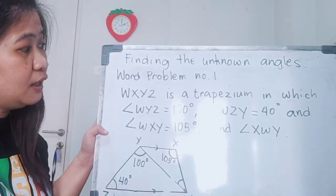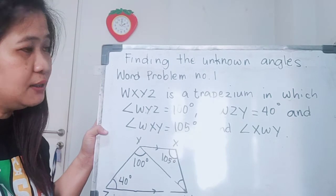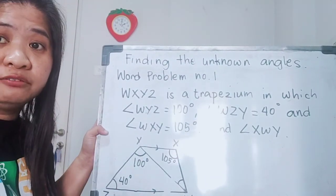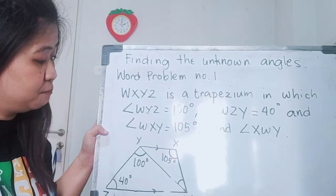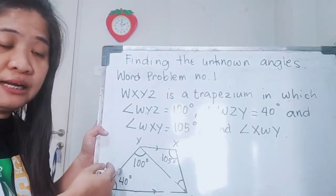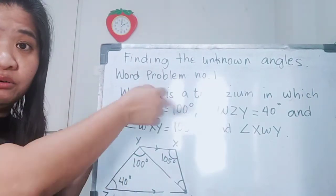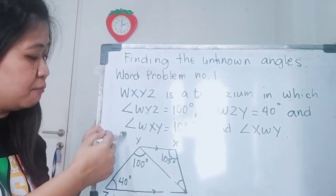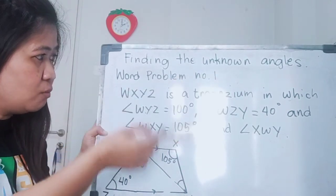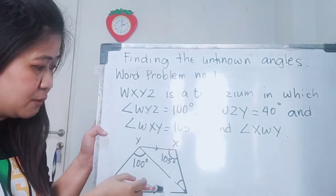In answering this kind of word problem, you have to understand and analyze all the given values. Try to look at and analyze the figure, and check with the words given in the problem. WXYZ is a trapezium.